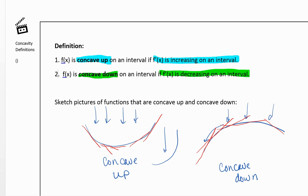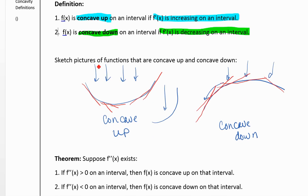So in terms of f(x), f(x) is going to be concave up when the second derivative is positive. So when the second derivative is greater than zero, then f(x) is concave up.